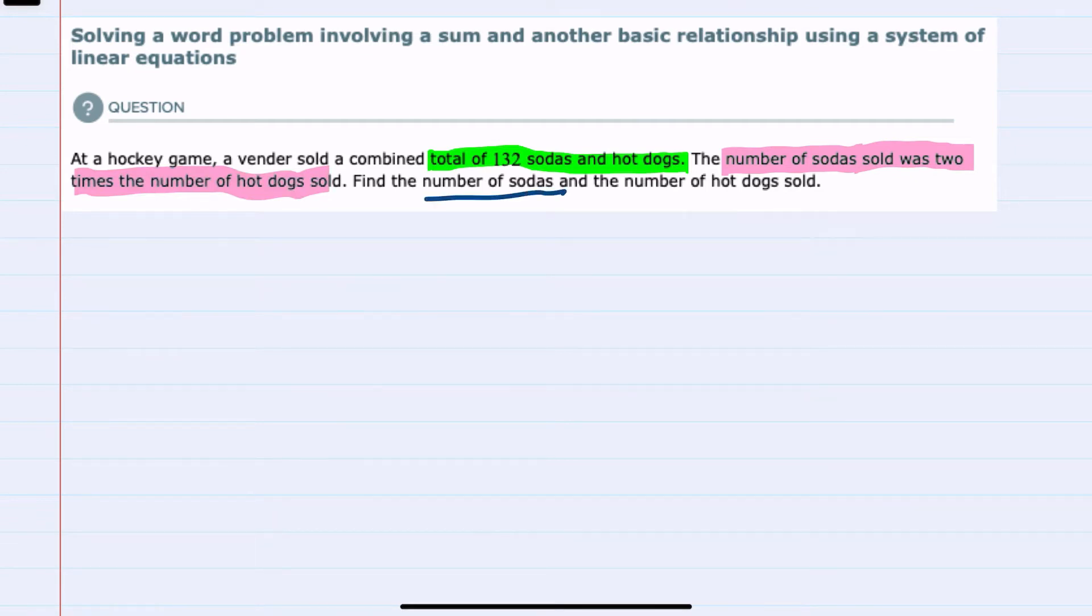And we're asked to find the number of sodas and the number of hot dogs. So for variables, I'm going to use S for the number of sodas and H for the number of hot dogs.